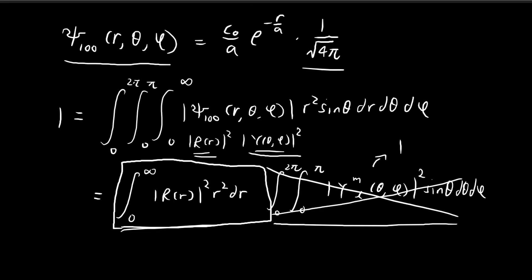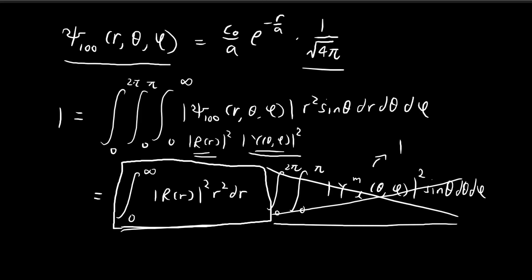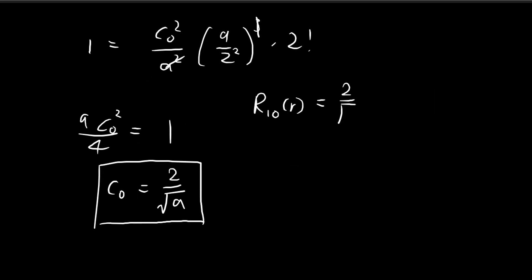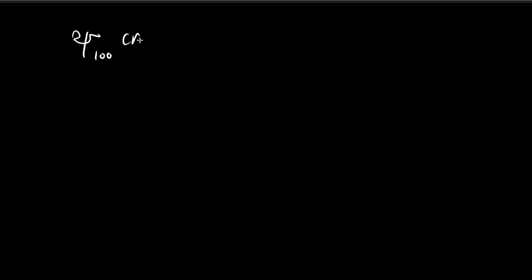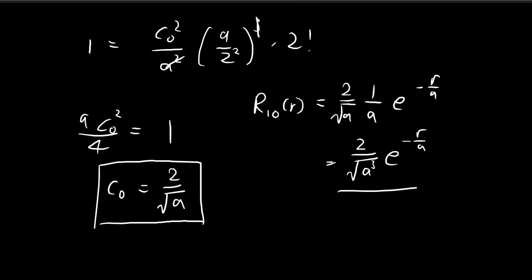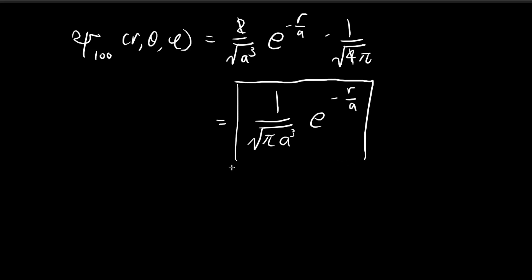Taking c₀ = 2/√a, we can finally construct our solution. R₁₀(r) = (c₀/a) e^(−r/a) = (2/a^(3/2)) e^(−r/a). Combining with the angular component Y₀₀ = 1/√(4π), and noting that terms cancel, we arrive at the final clean expression for the ground state wave function ψ₁₀₀. That is the final result.